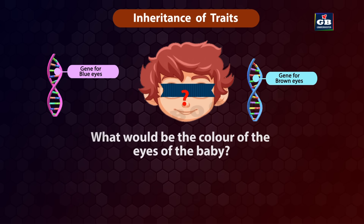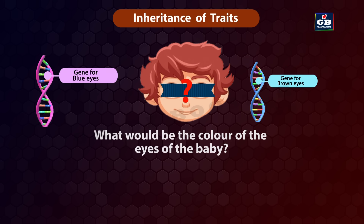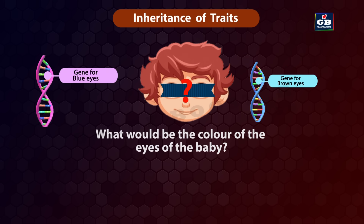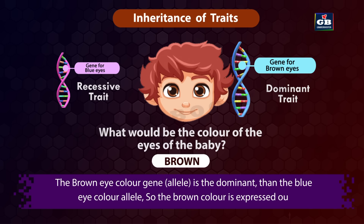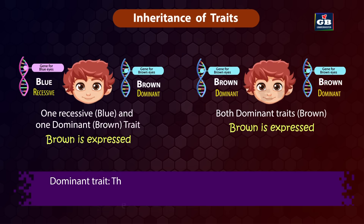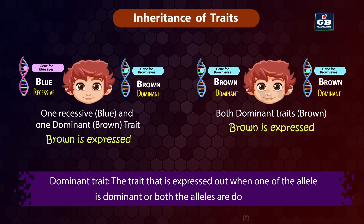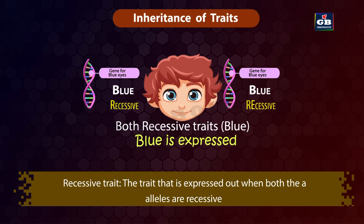What would be the eye color of the baby — brown or blue? The eye color will be brown, because the brown eye color gene is dominant over the blue eye color gene, so brown color is expressed. A dominant trait is expressed when one or both alleles are dominant. A recessive trait is expressed only when both alleles are recessive.